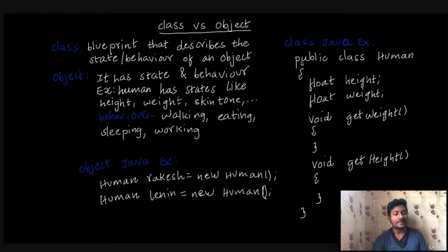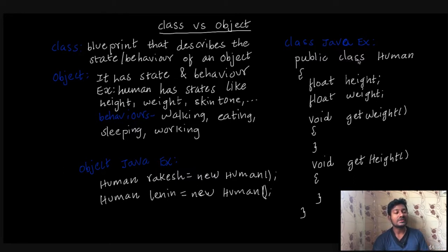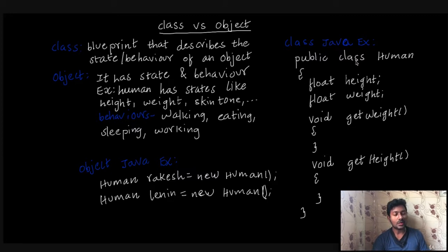We are going to use the access modifier. The class is a keyword. The keyword means it has a special meaning in Java. We are going to use all small alphabets. This is the keyword 'class'. Then 'Human' — this is the class name.